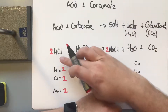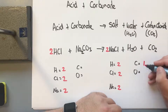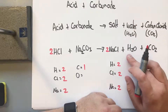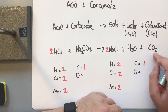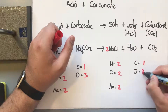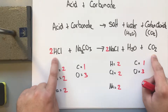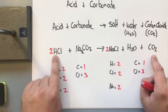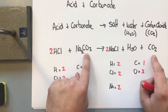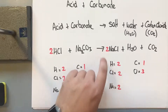Looking at carbons: we have one carbon on the reactants side in CO₃, and one carbon on the products side in CO₂ — balanced. Looking at oxygens: we have three oxygens on the reactants side in CO₃, and one in H₂O plus two in CO₂ gives three on the products side — balanced. So the final balanced equation is: 2HCl + Na₂CO₃ → 2NaCl + H₂O + CO₂.